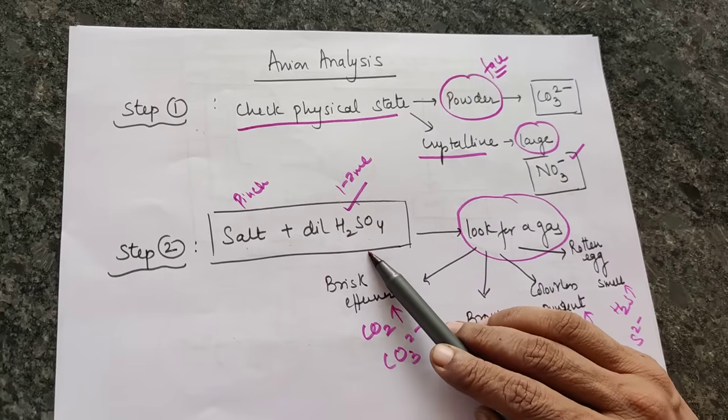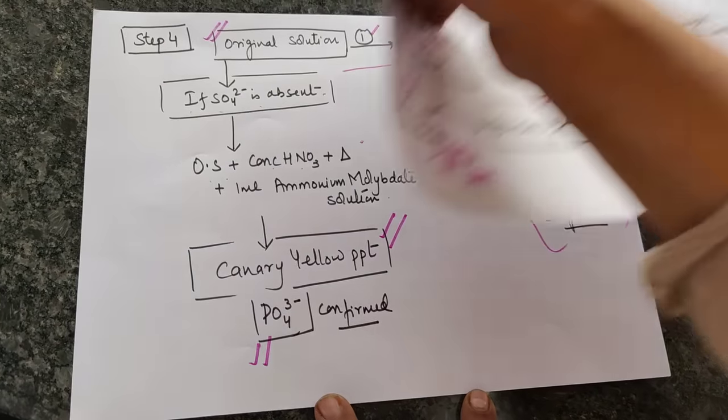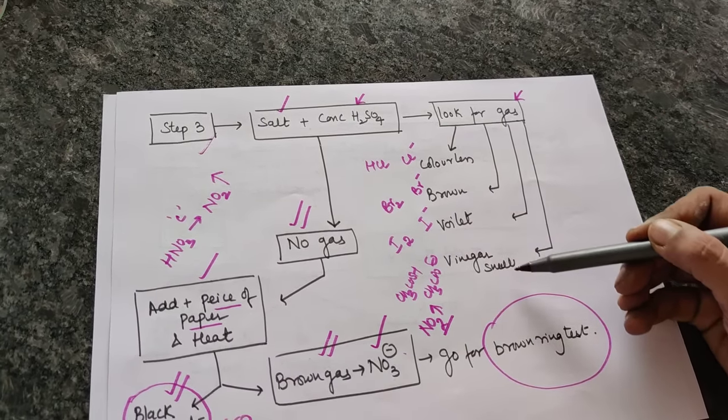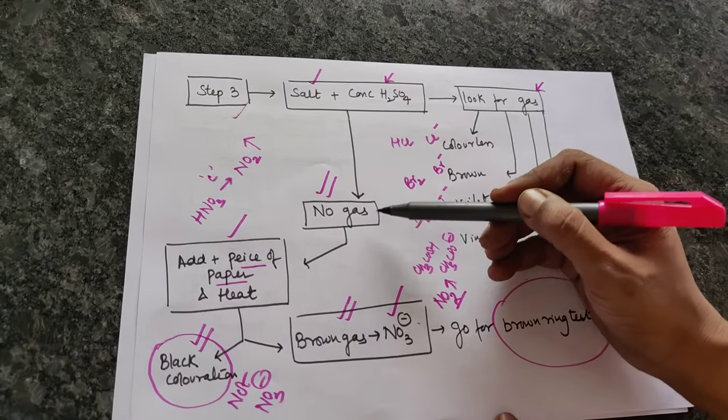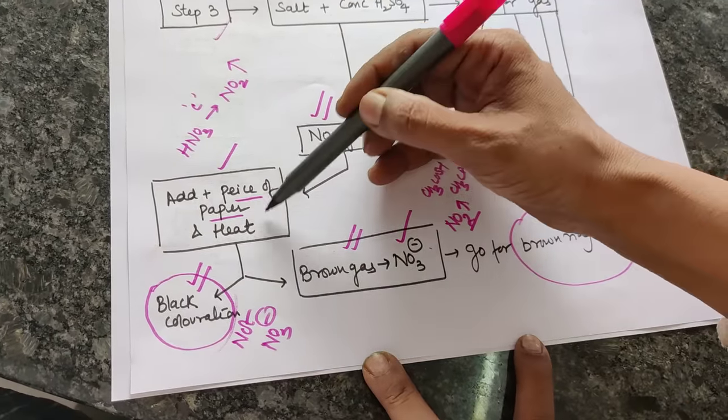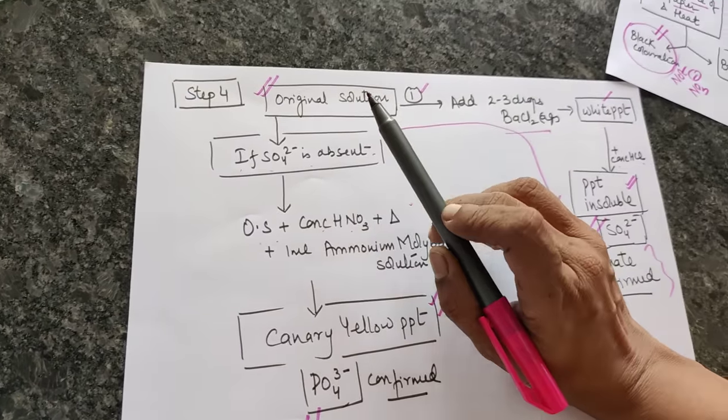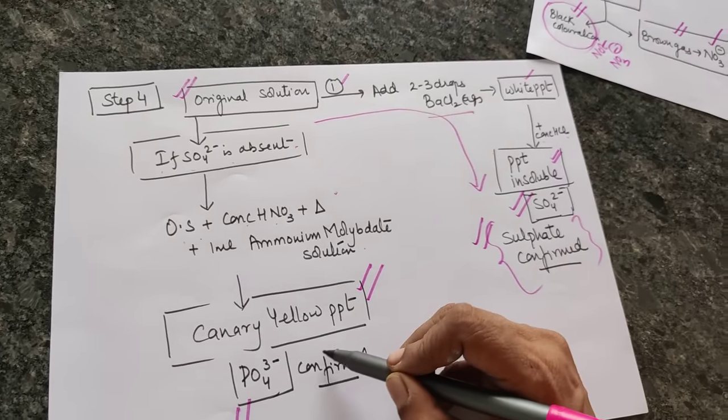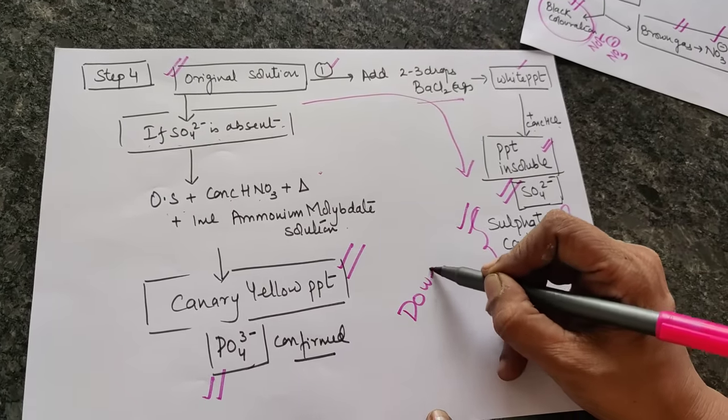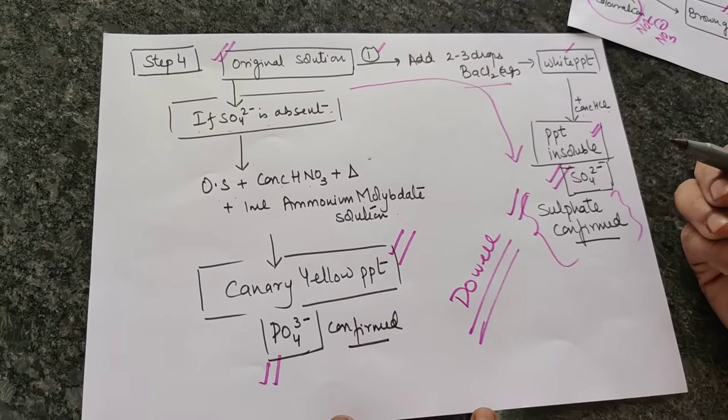Let me quickly sum it up for you. Step one: check physical state. Step two: add dilute sulfuric acid - if you get a gas, these are the anions present. Step three: add concentrated sulfuric acid to the salt - if you get a gas, it is chloride, bromide, iodide, or acetate. If you do not get a gas, go for a piece of paper and heat it. If you get black coloration, it is not nitrate. If you get brown gas, it is nitrate. If nitrate is not there, then go to step four. You require the original solution for testing sulfate and phosphate. Please rule out sulfate and then go for phosphate. With this I end the class. Please do well, keep watching the channel, keep watching the videos on the practicals, and keep sharing if that's possible for you. Bye.